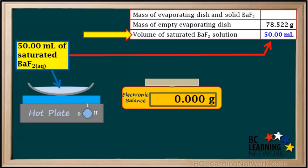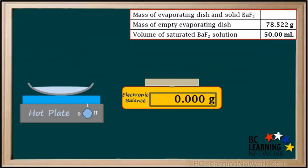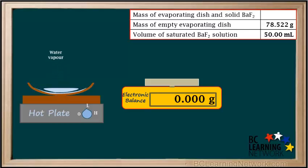We record 50 milliliters as the volume in the data table. Now we turn the hot plate on at a low setting and let it warm up. The water slowly evaporates, leaving a small amount of solid residue in the evaporating dish.